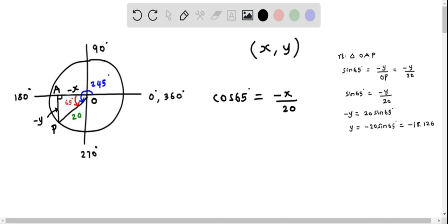Now we can determine X from this equation. First we multiply both sides by 20, so we get negative X equals 20 times cosine of 65 degrees. We divide both sides by negative 1, and this gives X equals negative 20 times cosine of 65 degrees.